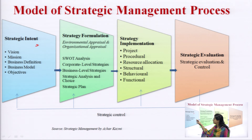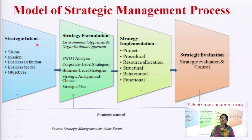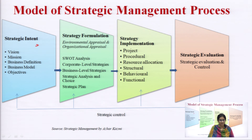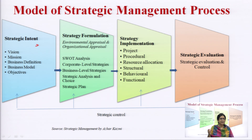This is the first step of the strategic management process — strategic intent. Strategic intent is the purpose the organization is striving for, the obsession of an organization. It can be figured out with the help of vision, mission, business definition, business model, and objective. A strategic intent can only be created with the help of identification of these five elements.